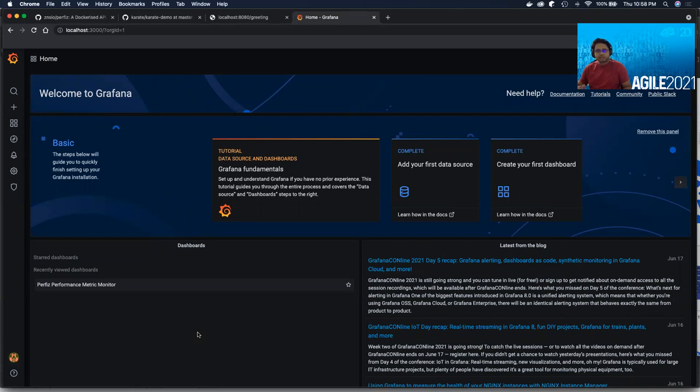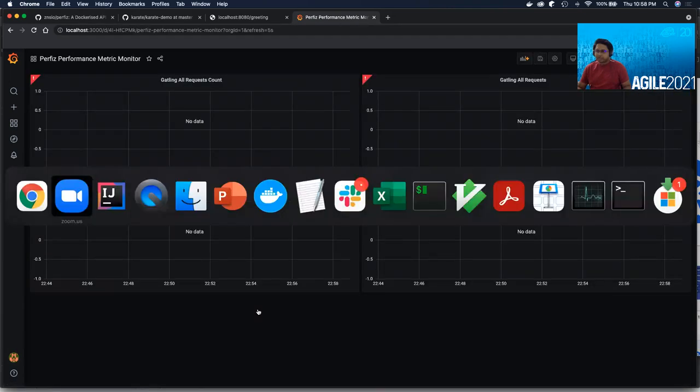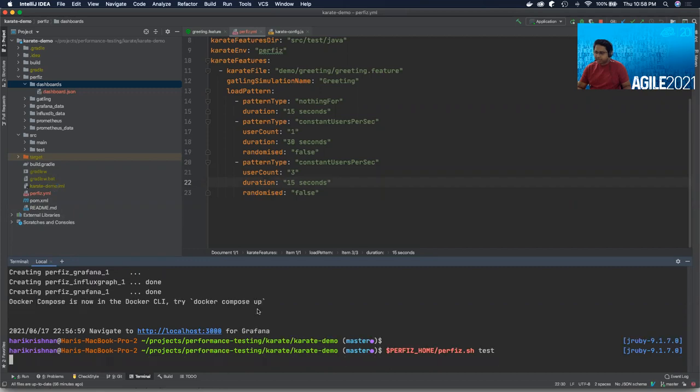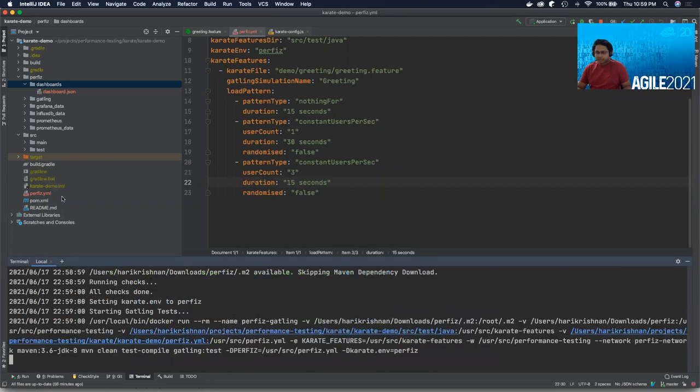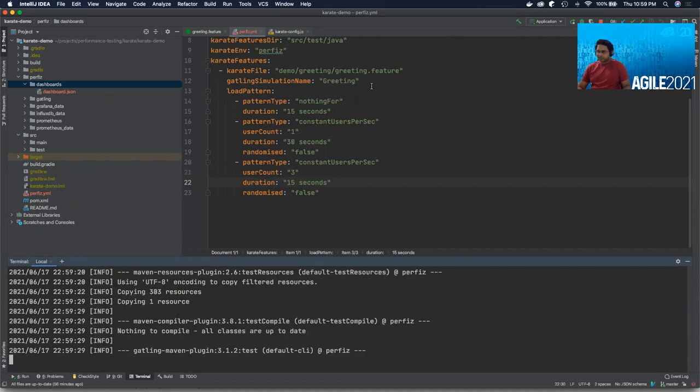Inside Grafana, you'll notice that perfis has already dropped in a template dashboard. Obviously, there's no data inside this. Let's kick off a test to see how this dashboard looks. So in order to run a test, all I need to do is perfis.sh test command. And it will pick up the perfis.yaml configuration by default. perfis now takes the greeting.feature file and the load pattern we have defined here and generates a Gatling simulation, which will run for about 60 seconds, as we have mentioned here.